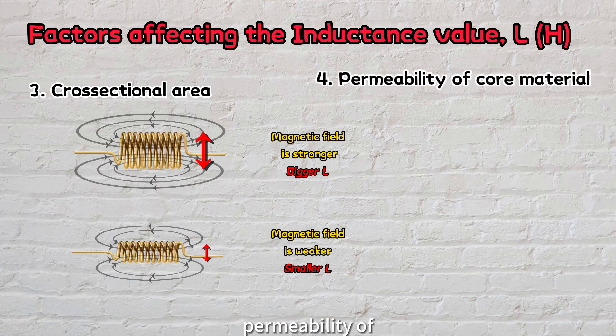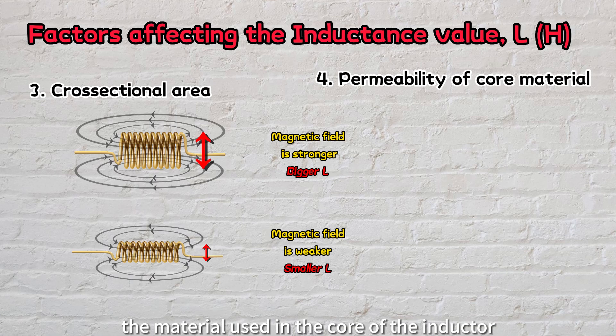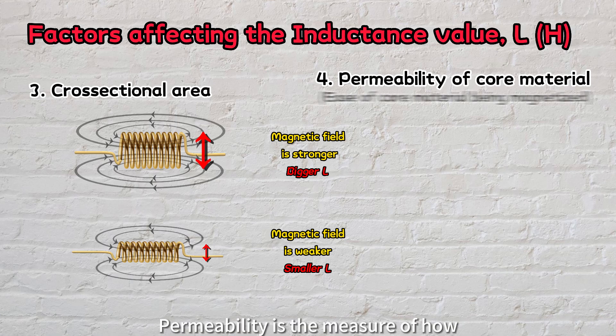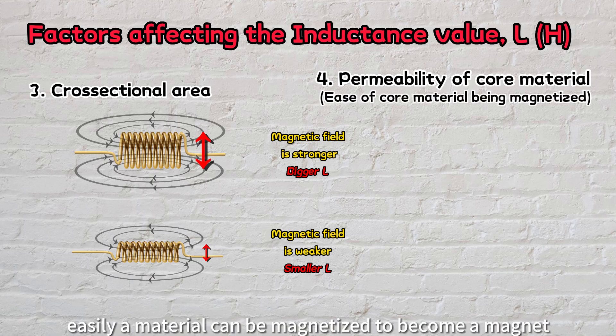Lastly, the permeability of the material used in the core of the inductor plays a crucial role in affecting the inductance. Permeability is the measure of how easily a material can be magnetized to become a magnet.